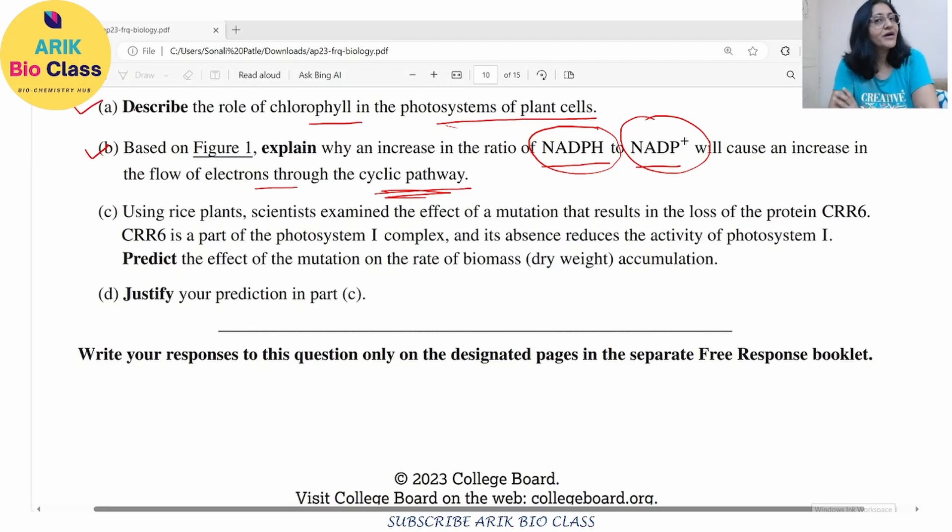Now let's come to part C. Using rice plants, scientists examined the effect of mutation that result in the loss of this protein CRR6. It is a part of photosystem I and its absence reduces the activity of photosystem I. What does photosystem I do? That we have to see. So you have to predict the effect of mutation on the rate of biomass accumulation. Now let's move towards the concept of mutation. Mutation is basically whenever there is an error caused, the protein won't be able to form and that affects the efficiency of particular system. So that is how photosystem I will not work properly.